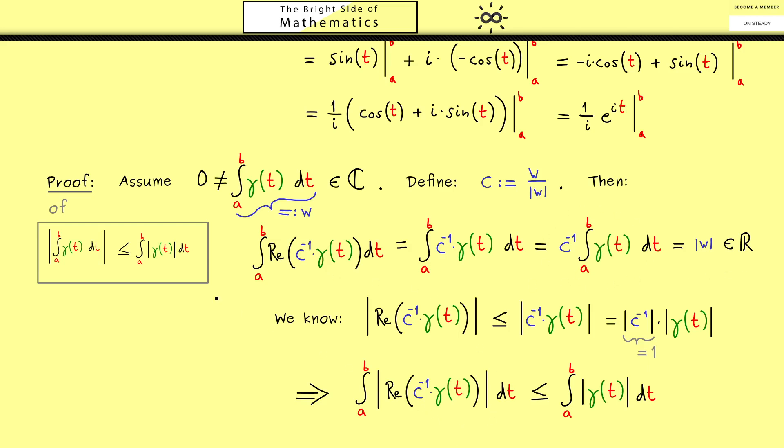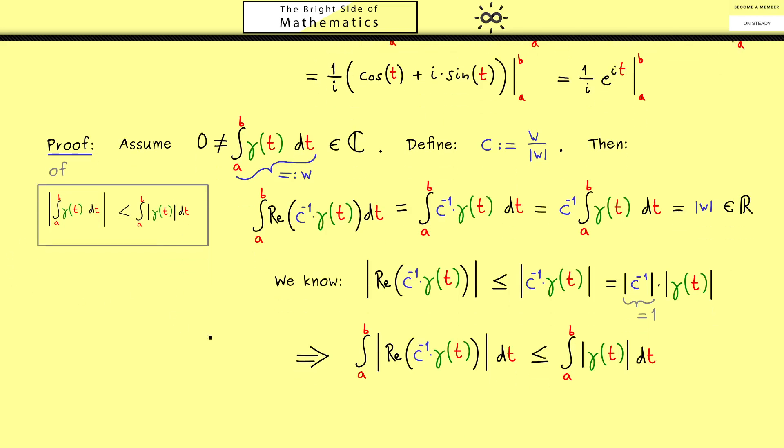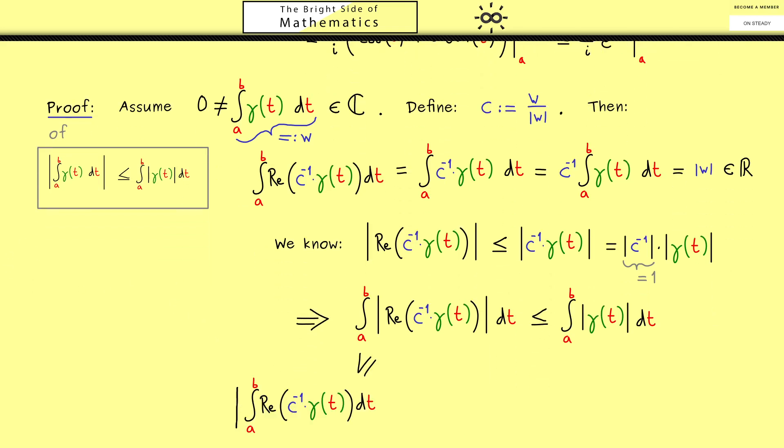Because now we can just use this fact here for a real integral. Of course this is something we know already holds. So without a problem we have the inequality here for the real part. And exactly here the equality from above comes in. So this is exactly the absolute value of this integral here. And now because we have chosen c to be on the unit circle, it will vanish in the absolute value as before. In summary you can see we have proven our important fact from above.